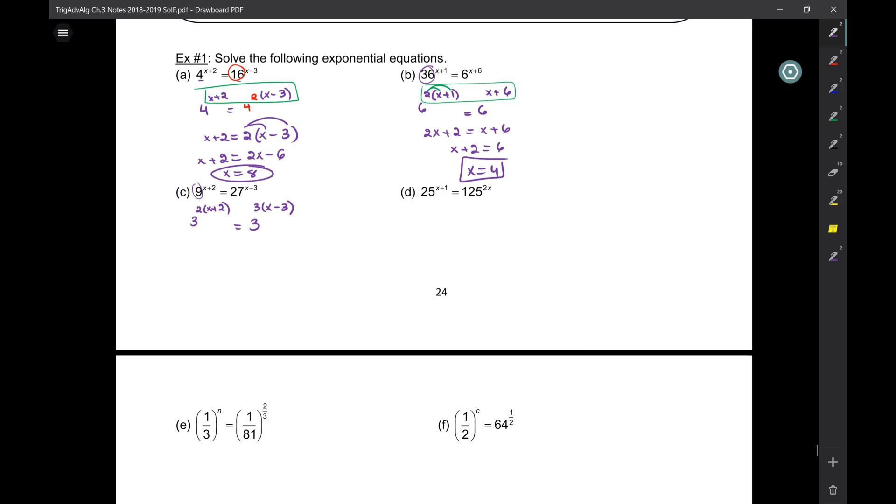Same base. Doesn't matter what the base is, just that it has to be the same. Setting these equal to each other, I get two x plus four equal to three x minus nine. I'm going to subtract two x's. So four equals x minus nine. And then when I add nine, x is 13.